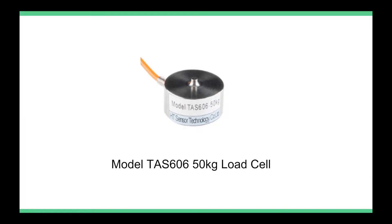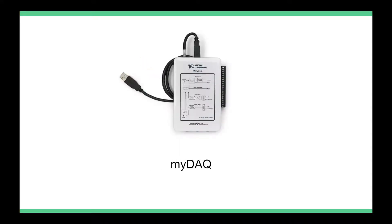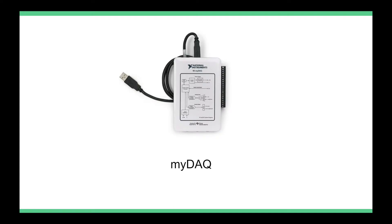Our device consists of three main components: four sensors, a digital-to-analog converter, and a physical structure. We use four load cells in our clamp system. Each sensor produces an electric potential based on the force applied. We are using the MiDAC digital-to-analog converter to record the electric potential from the load cells and convert it to a force reading. Each MiDAC can accommodate two load cells.